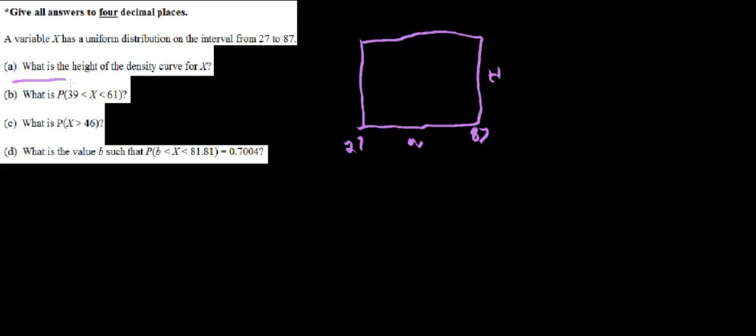The first question asks, what is the height of the density curve for x? So it wants to know what the height is of this uniform distribution. In order to solve this part of the question, we need to do 87 subtract 27 and get 60. Now we know the width. The width is 60.